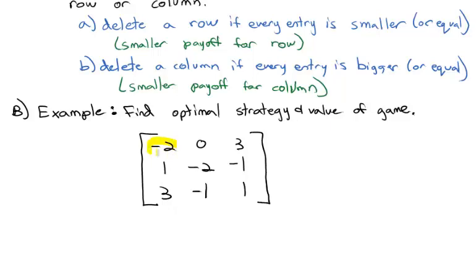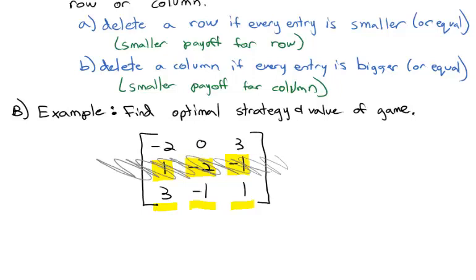Looking at the first entry, negative 2 is smaller than the other rows, but the 0 is not smaller — so that's not a dominated row. What about the middle row? The 1 is smaller than 3; negative 2 is smaller than negative 1; and negative 1 is smaller than 1. Every entry in the middle row is smaller or equal to every entry in the bottom row. This means the middle row always gives a smaller payoff than the last row — you would never pick that option, so the center row is dominated and we cross it out.